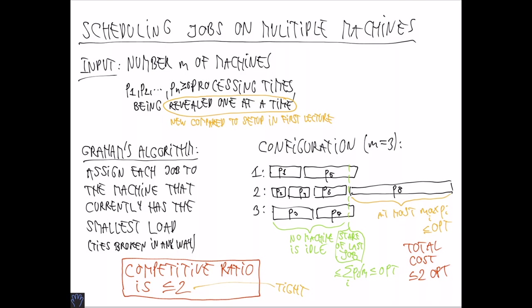The factor 2 is tight in the sense that it is the best constant that holds for any number of machines M.